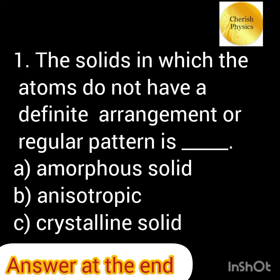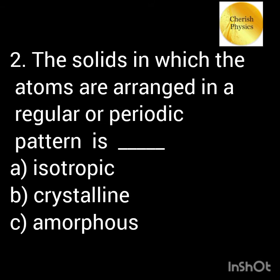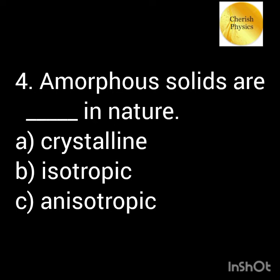Solids which do not have a definite arrangement of atoms are amorphous solids. Solids in which the atoms are arranged in a regular pattern are crystalline solids. What is the nature of amorphous solids, and what is the nature of crystalline solids?